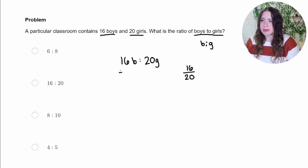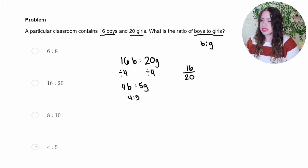So, for example, I know that 4 goes both into 16 and 20. So I can divide both of these by 4, producing the reduced ratio 4 boys to 5 girls or 4 to 5, which is our correct answer right here.